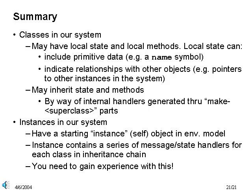This example has further illustrated several aspects of our object-oriented system. We have seen that classes in our system can have local state and local methods. The local state might include not only primitive data, like a name which is a symbol, but also variables that indicate relationships by way of pointers to other instances in the system. These has-a relationships complement what we've seen previously, which was invocation of methods through the inheritance chain. In addition, we have seen a further example of how instances in our system work — specifically how instance creation builds up a sequence of message and state handlers for each class in the inheritance chain, and how messages get passed along this sequence of handlers to find the desired method. You will need to practice with more examples like these in order to gain experience in both writing object-oriented Scheme code and in understanding how the object-oriented system works in Scheme environments.